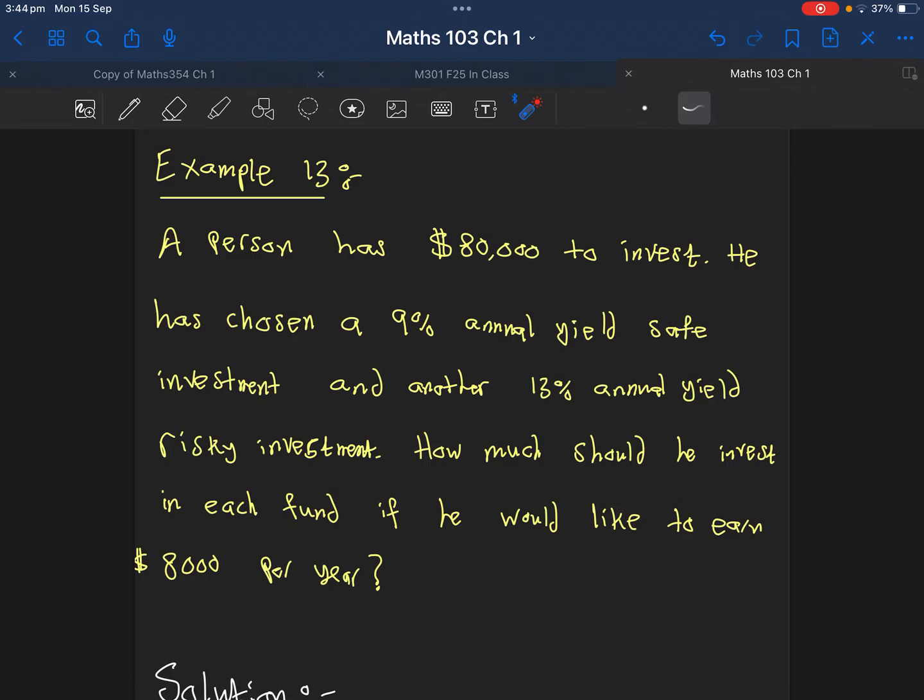Welcome to this question where we have a person who has $80,000 that he wants to invest. He has chosen a 9% annual yield safe investment, and another option which yields 13% risky investment. The question is how much he should invest in each of these funds if he would like to earn $8,000 per year.